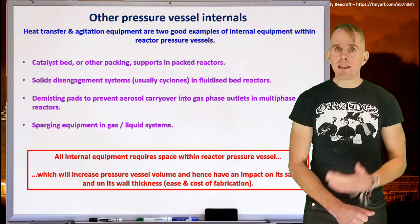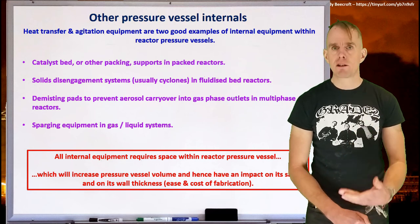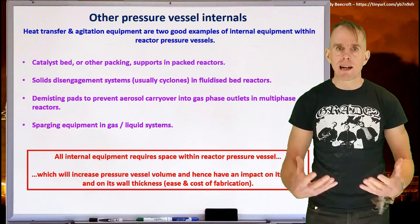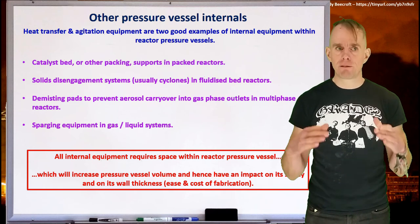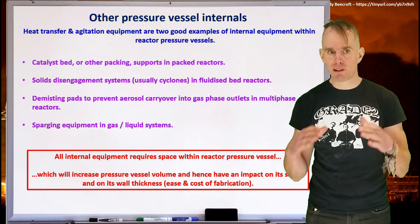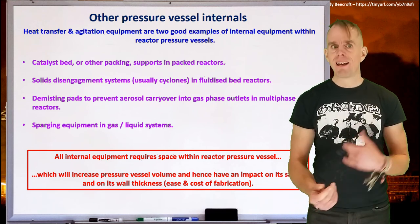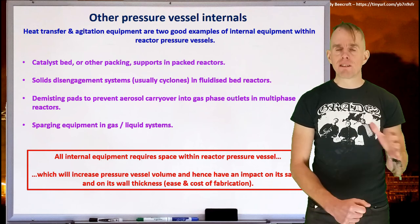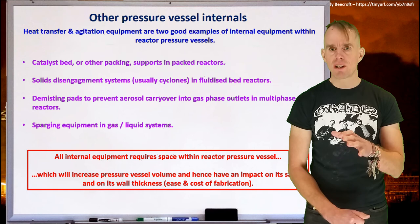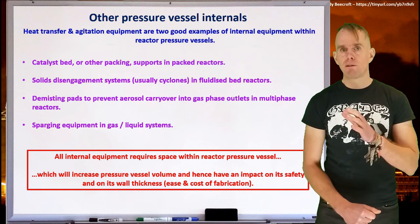If you've got a multi-phase gas liquid system, of course you've got to get your gas into the reacting liquid, and typically sparging equipment or other means of introducing gas into the liquid will be needed. And of course all these things take up space within the reactor pressure vessel, which affects the pressure vessel volume, which can have an effect on its safety and wall thickness, and hence its ease and cost of fabrication. So there's a lot of things to think about when transitioning from a nice process simulation through to the first pass of a mechanical design.